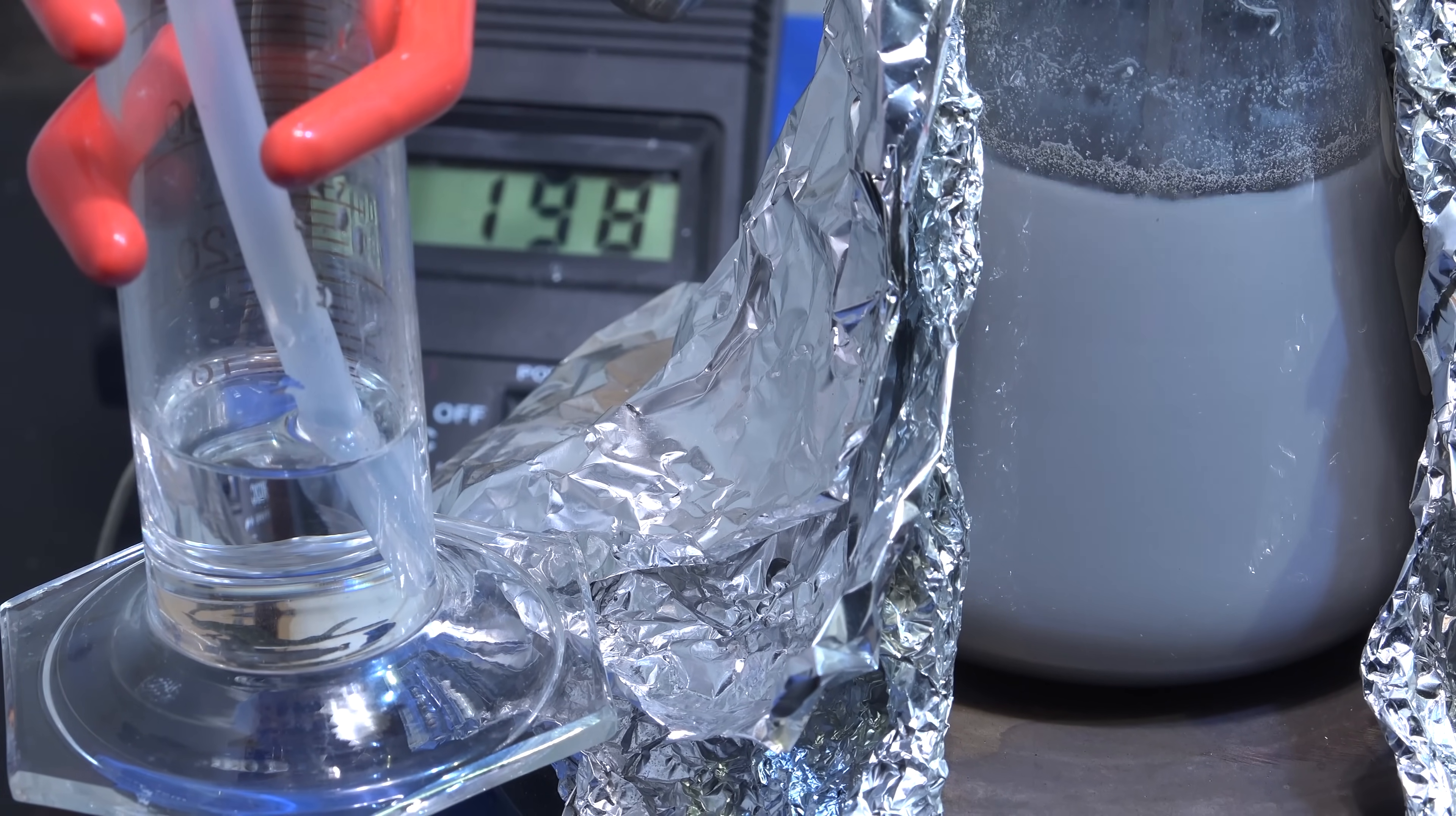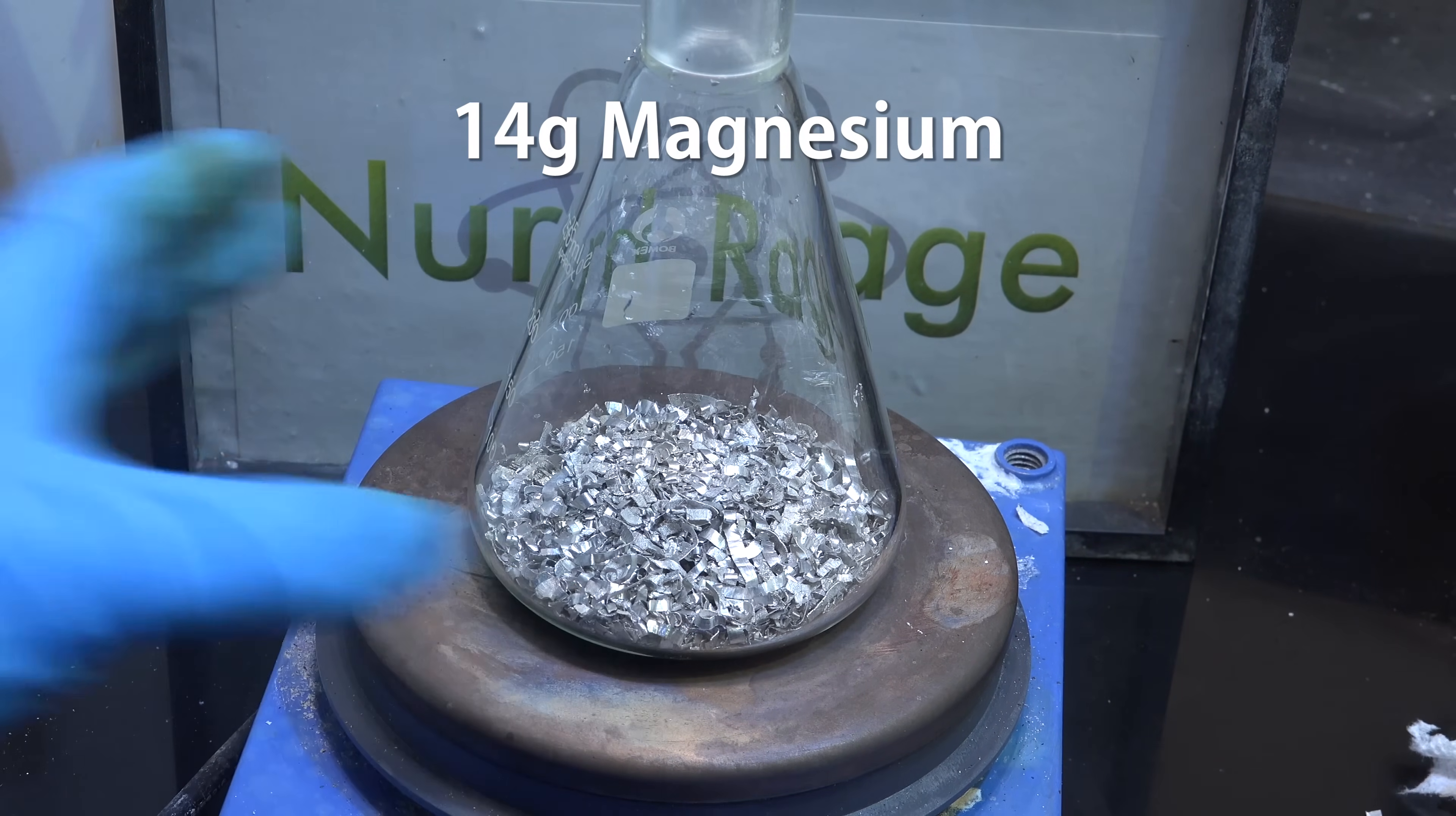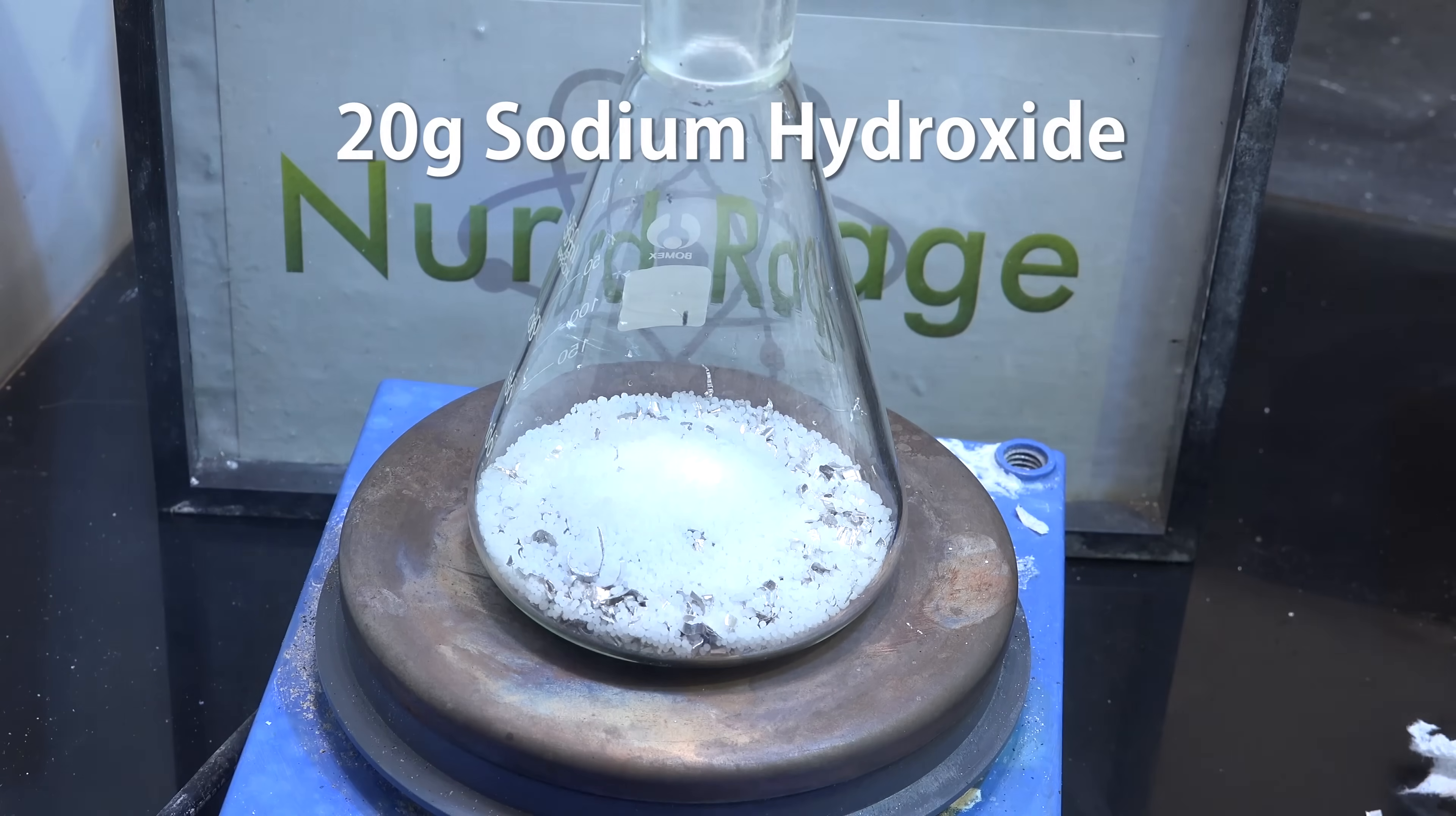It's also very high yielding giving consistently better than 90% yields. To do it we get a dry flask and start with 14g of magnesium metal. The finer the better. I'm using turnings but I recommend powder if you can get it. Add in on top 20g of sodium hydroxide. This is available as drain opener from most hardware stores.